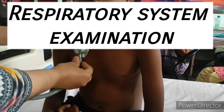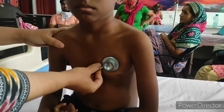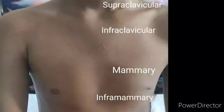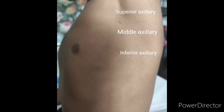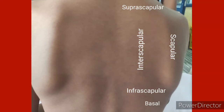In this video I will explain how to perform the respiratory system examination. All findings should be mentioned according to the anatomical areas of the chest. There are four anatomical areas on the front of the chest: supraclavicular, infraclavicular, mammary, and inframammary. The axillary area is divided into superior, middle, and inferior axillary. The back of the chest is divided into five areas: suprascapular, interscapular, scapular, infrascapular, and basal.